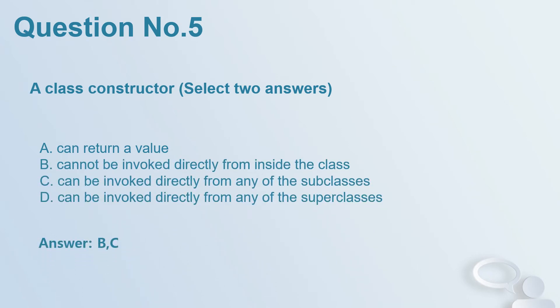Question number 5. A class constructor, select two answers. A. Can return a value. B. Cannot be invoked directly from inside the class. C. Can be invoked directly from any of the subclasses. D. Can be invoked directly from any of the superclasses. Answer: B, C.